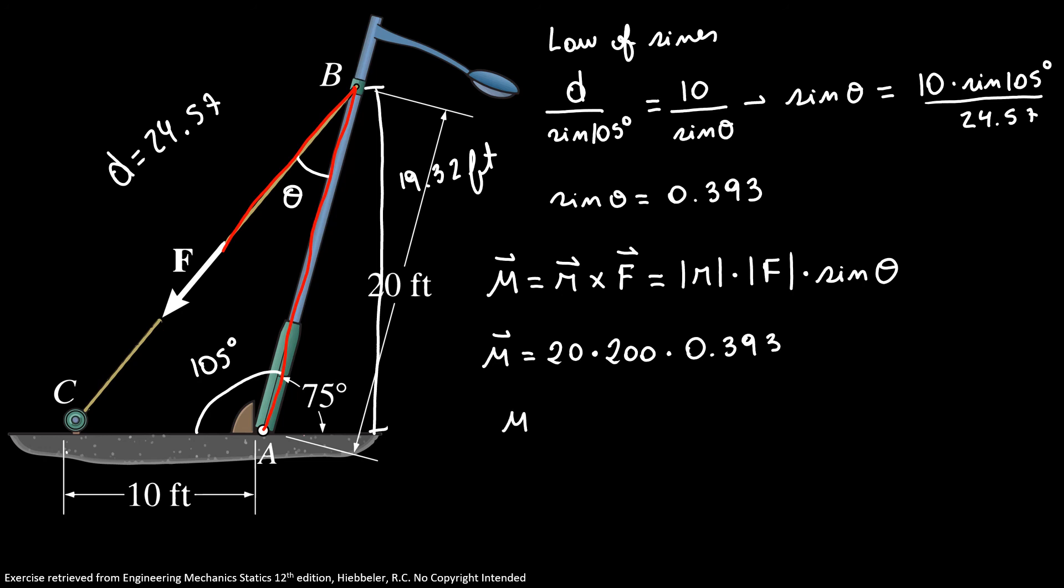So, the magnitude of my moment is equal 1574 pounds-feet or 1.57 kip-feet. The answer has to be the same. Thanks for watching until the end. See you in the next video.